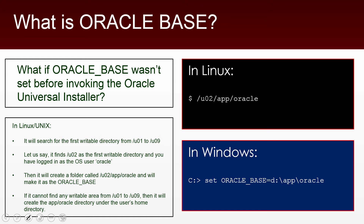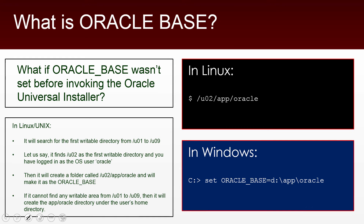In Linux and Unix environments, the installer will search for the first writable directory from mount points — which are equivalent to disk drives like C or D drives in Windows — ranging from /u01 to /u09. It needs to be a writable mount point or writable directory. So let us say it finds /u02 as the first writable directory and you have logged in as the operating system user oracle.